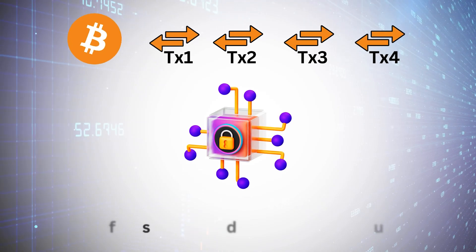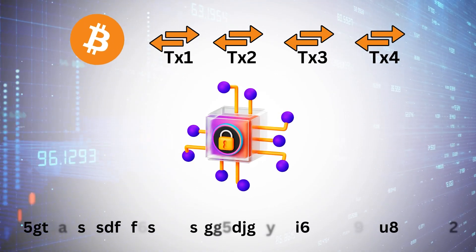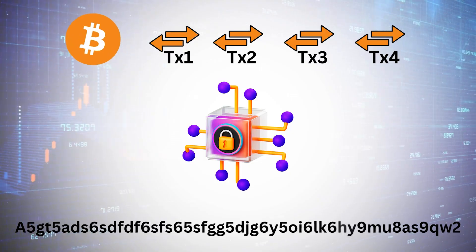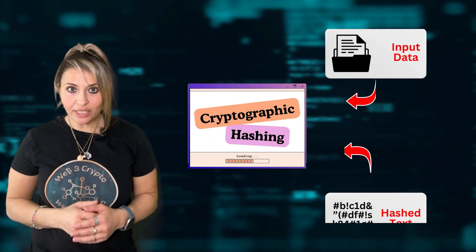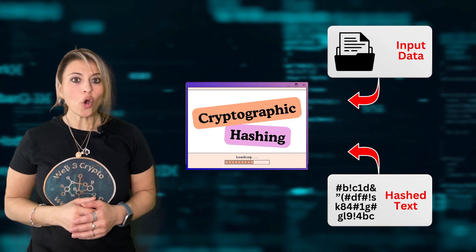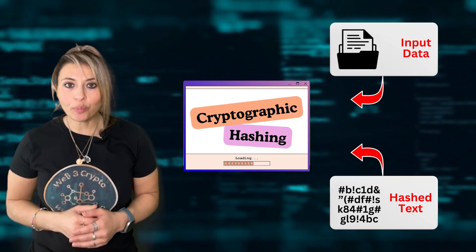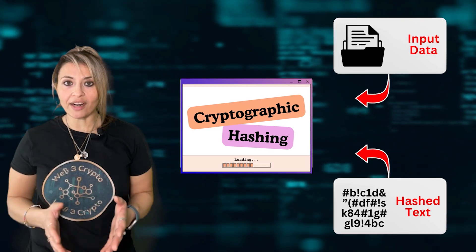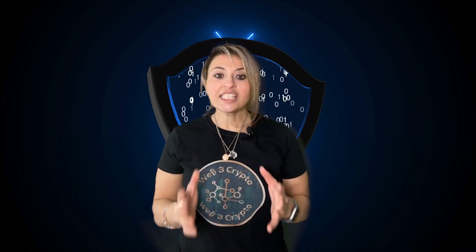Cryptographic hashing is a process used not just in Bitcoin but across the digital security field. In simple terms, it takes any input data — whether a single word or a massive file — and outputs a fixed-size, unique string of characters known as a hash. This hash is a one-way street: once data is turned into a hash, you can't revert it back to the original data.